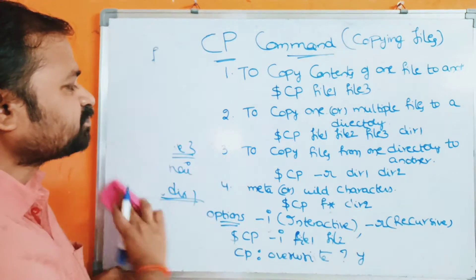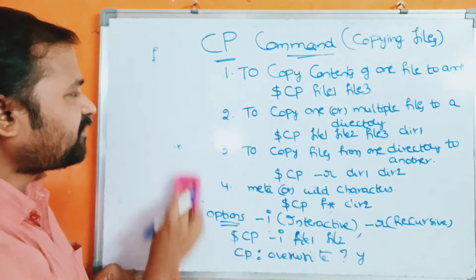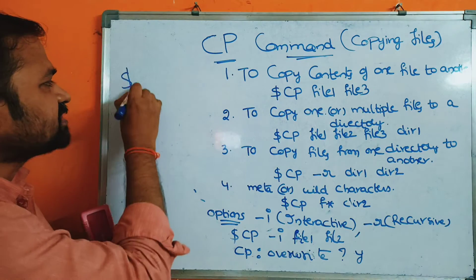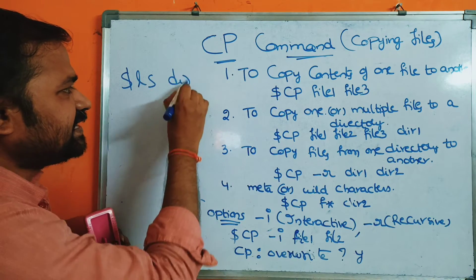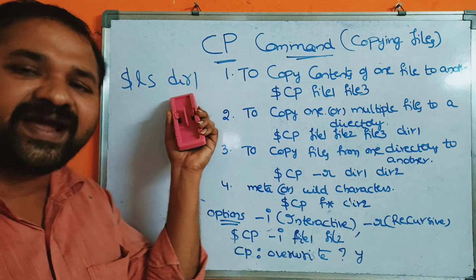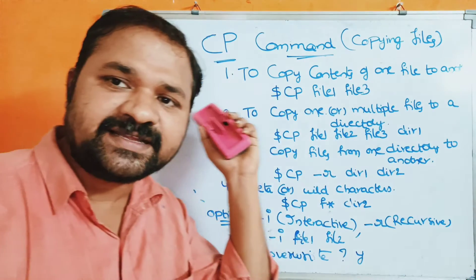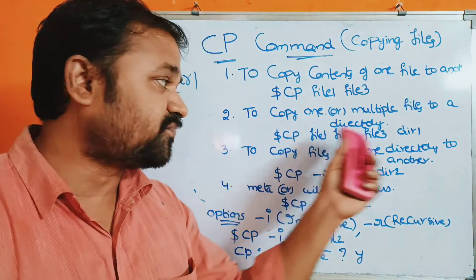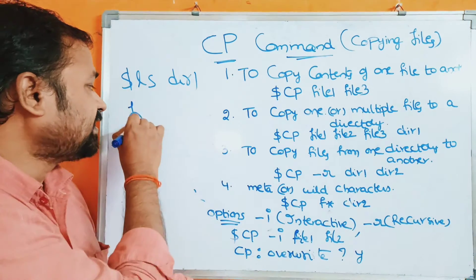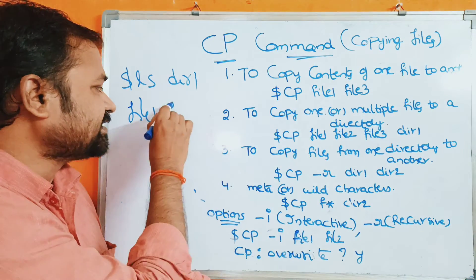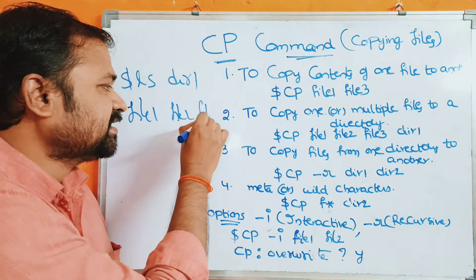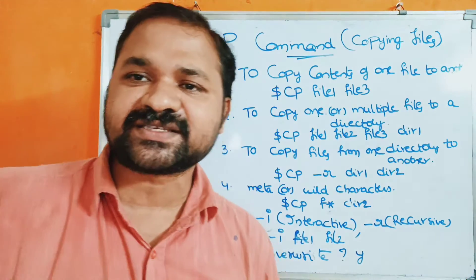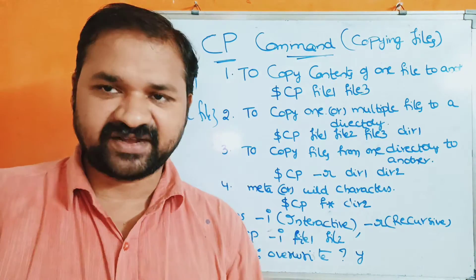After copying, directory1 will contain file1, file2, and file3. To verify, we can use: ls directory1, which will show the three files. If you want to view the content of file1, use the cat command: cat file1.